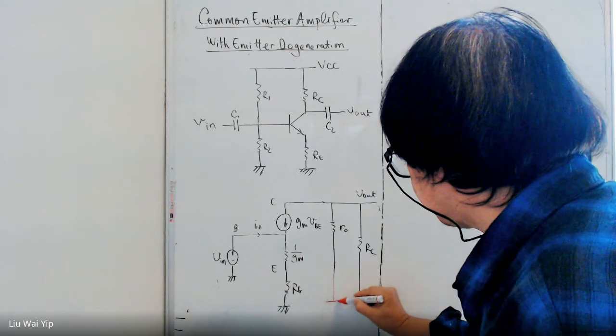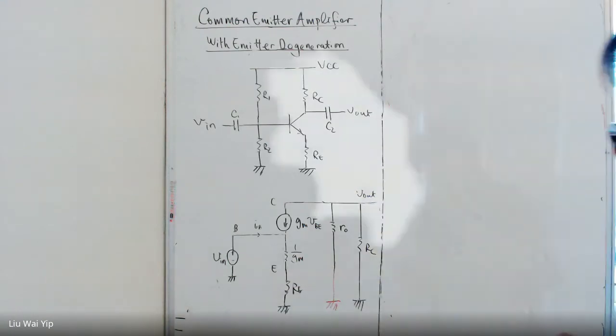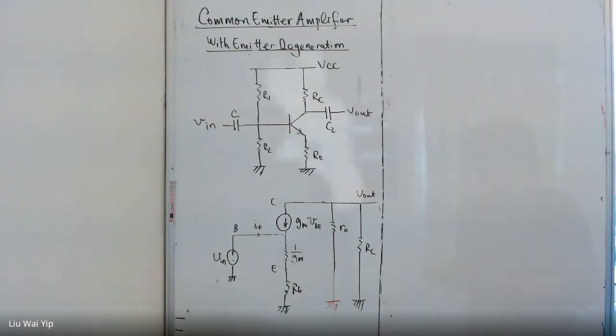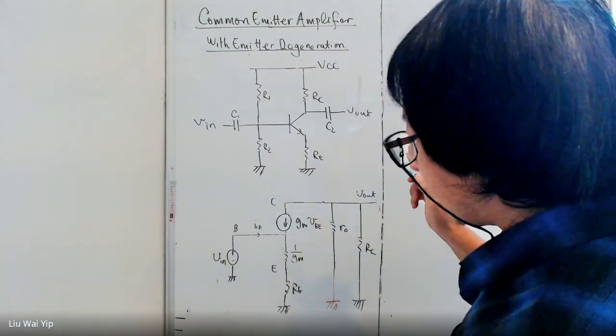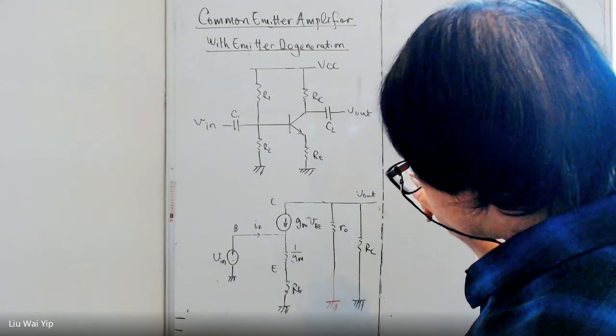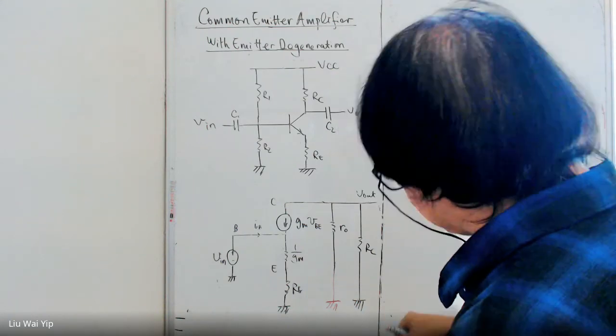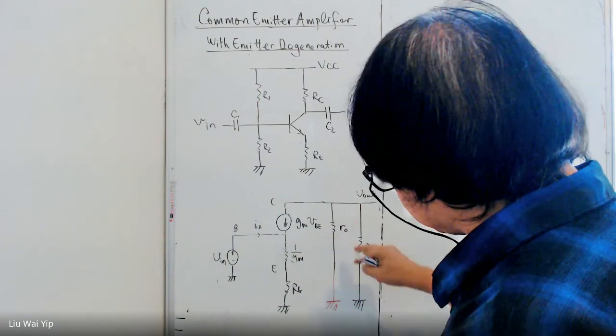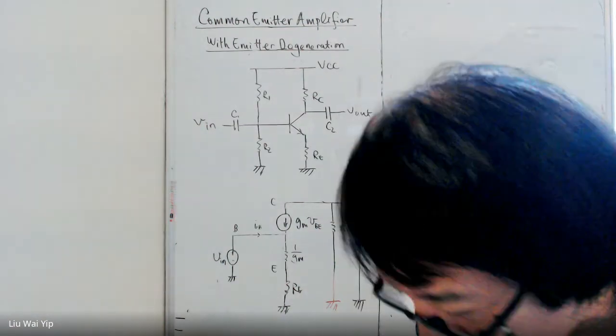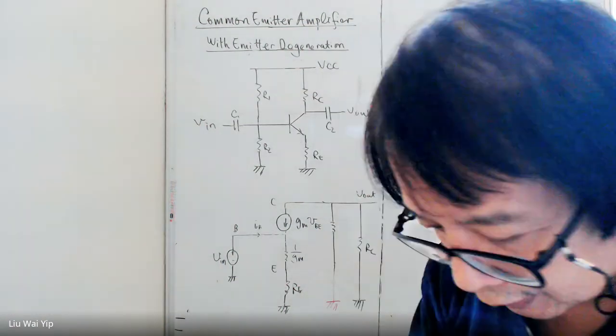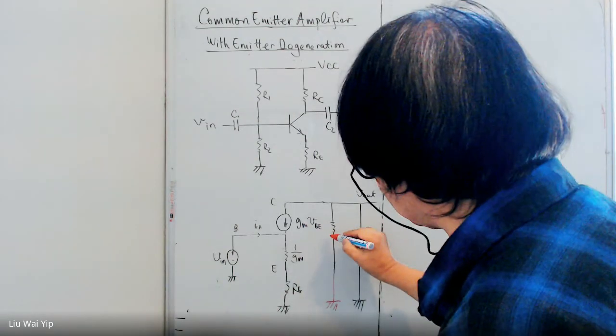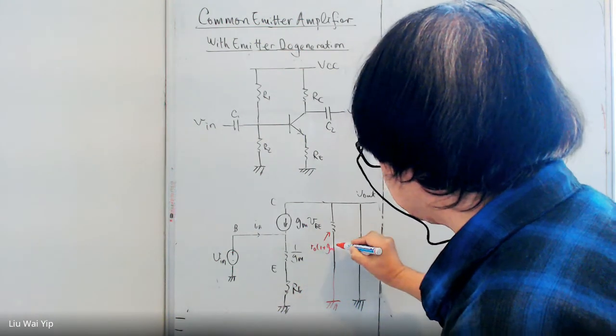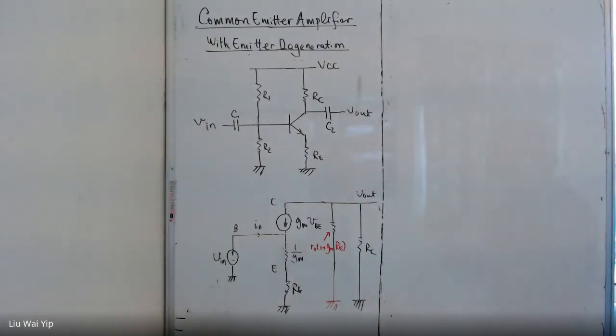And what we can do is instead of having this end of our R_o to be connected to this point here, we can do this, we connect it to the ground. So the R_o is going to be modified to here. And the value of R_o, by connected to the ground, the value of R_o is not the same. The value of R_o is going to be scaled up by 1 plus GM times RE. So I am going to write down here. The actual resistance, I mean, this point is not R_o anymore. It's scaled up. The value of R_o is going to be R_o times 1 plus GM times RE. So this is a very important one.